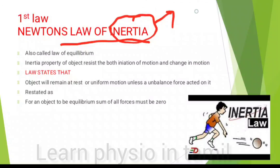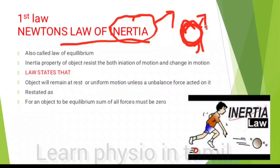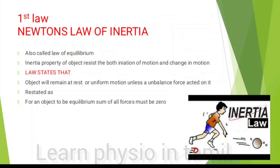Inertia is a property of matter. Like a ball, it has the property of inertia — the ball's motion can be static and immobile. Inertia is the property of an object to resist both the initiation of motion and changes in motion. This is also called the Law of Equilibrium.